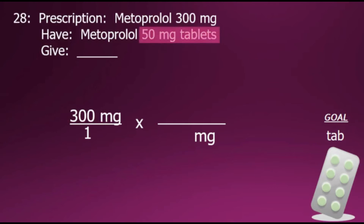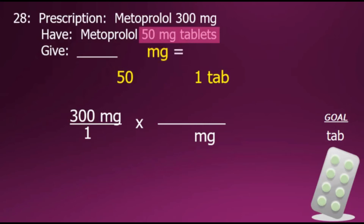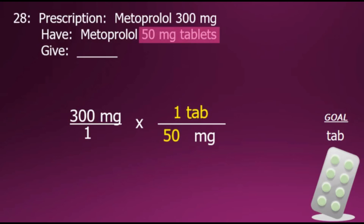The relationship between milligrams and tablets is stated here and highlighted on the screen. 50 milligrams is equal to 1 tablet. We'll take these equivalent values and express them as a fraction that we'll use for converting milligrams into tablets.